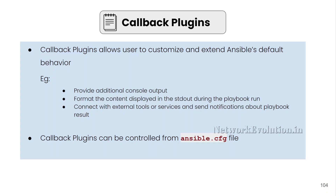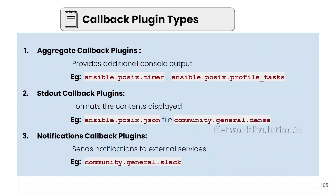In the later videos, we'll see how to send a Slack notification from Ansible using a callback plugin. Callback plugins can be controlled from the ansible.cfg file. There are three types of callback plugins available: Aggregate, stdout, and notifications.